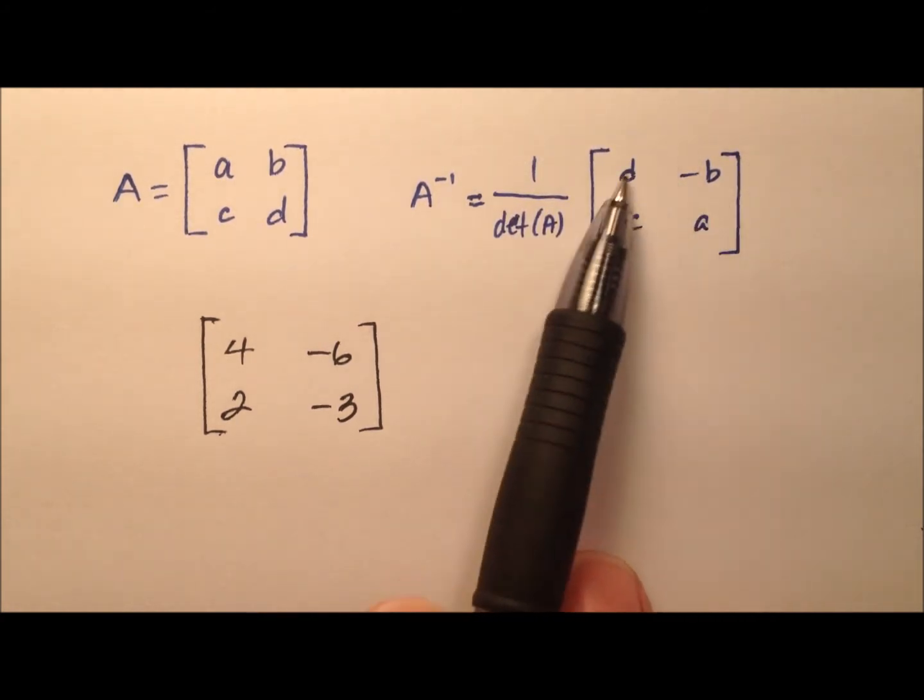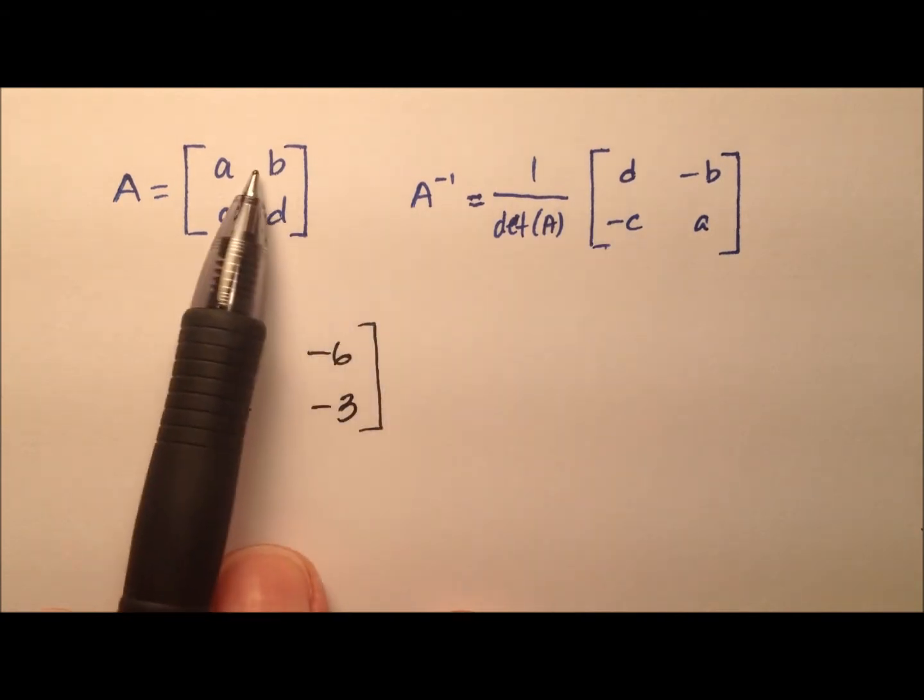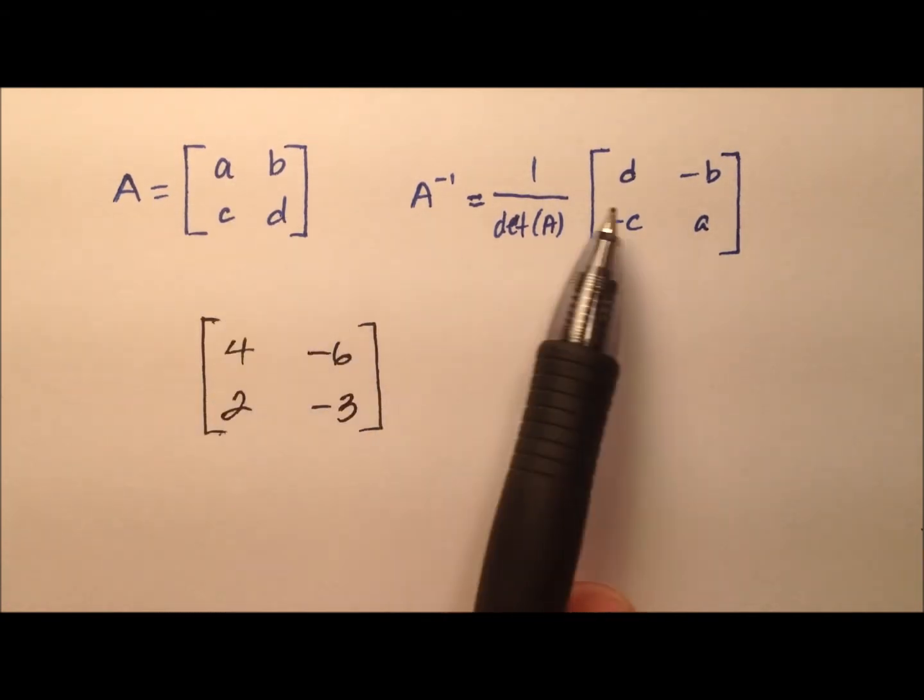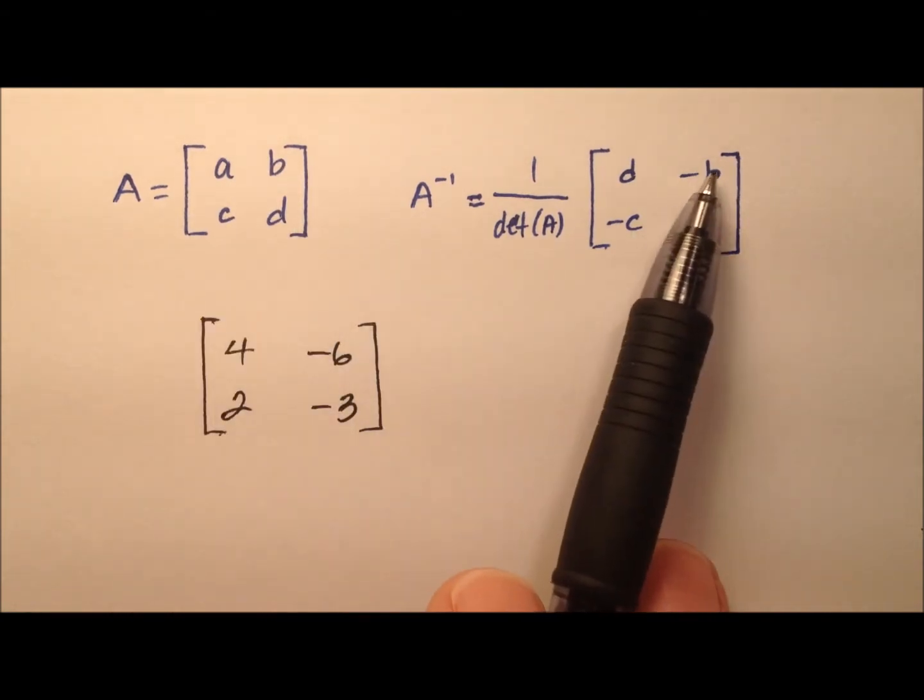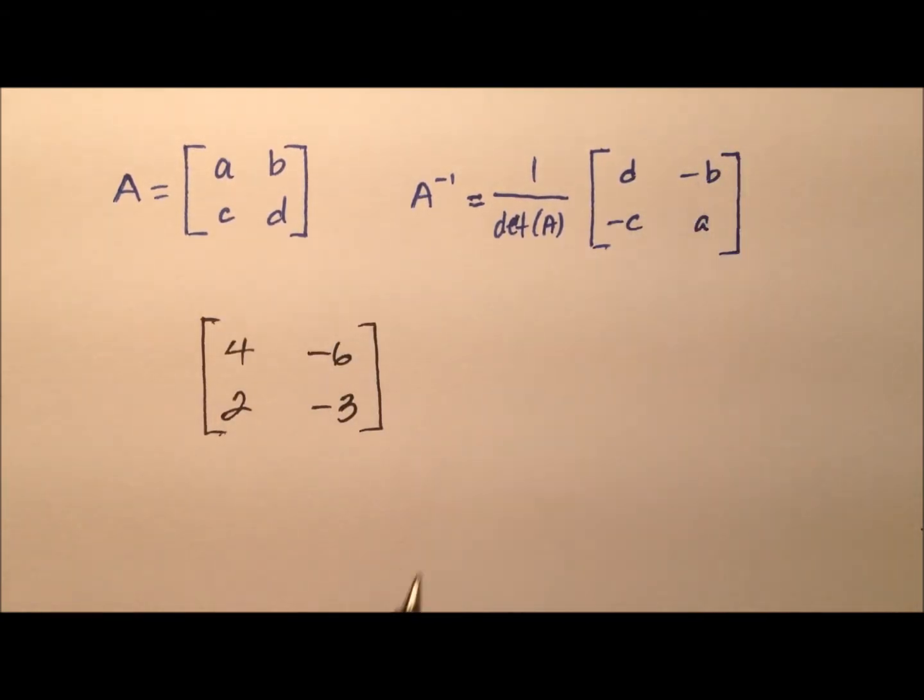And then we're going to do a little manipulation of the terms here. We're going to take instead of A and D in this main diagonal, we'll switch them and say D A, and then instead of B and C, we'll say negative B and negative C. So just change the signs here.